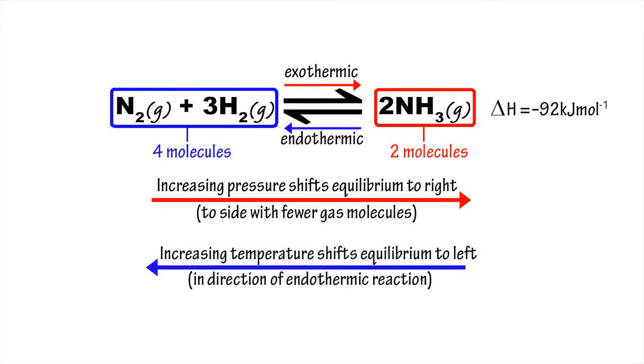On the other hand, high temperatures favor the back reaction, which is endothermic, so decrease the equilibrium yield of ammonia.